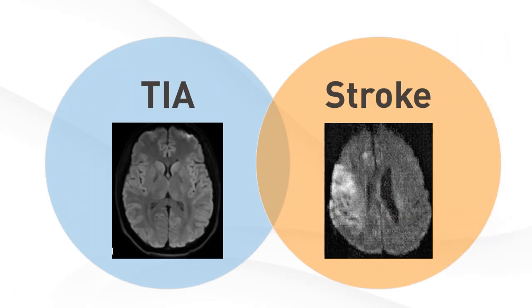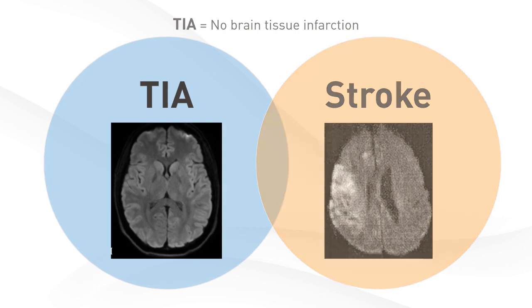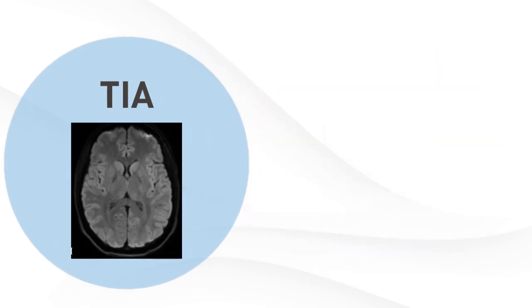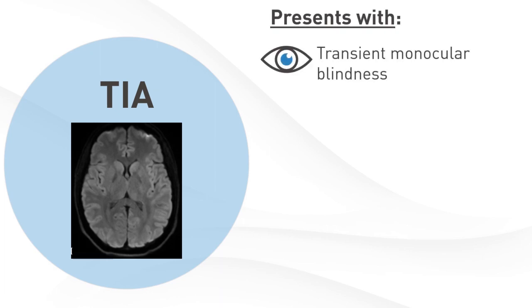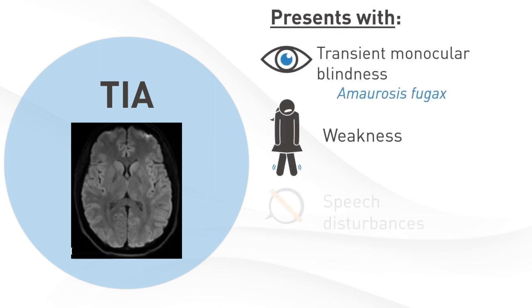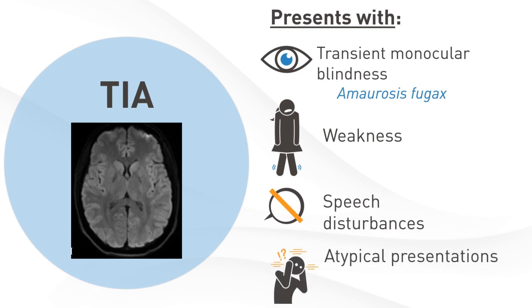TIA is distinguished from a stroke based on the presence of brain tissue infarction on the DWI sequences of a brain MRI. Presentation of TIA may vary, including transient monocular blindness or amaurosis fugax, weakness, or speech disturbances. TIAs also have a wide variety of atypical presentations, including vertigo, diplopia, and loss of coordination.